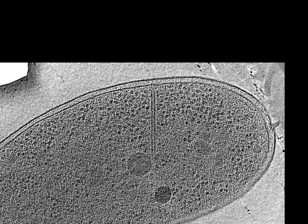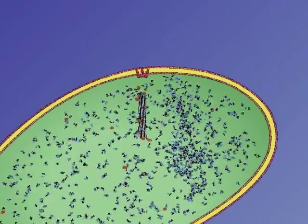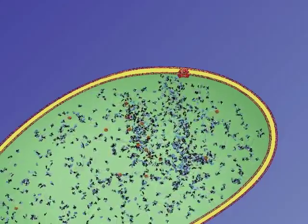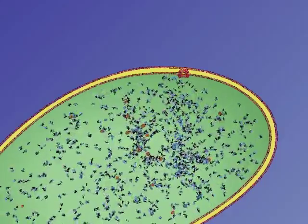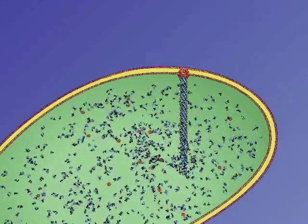Here you can see a central slice through a contracted sheath. After firing, the sheath is disassembled by a AAA ATPase, shown here in orange. A new base plate, inner tube and sheath then assemble so the cell is ready to fire again.